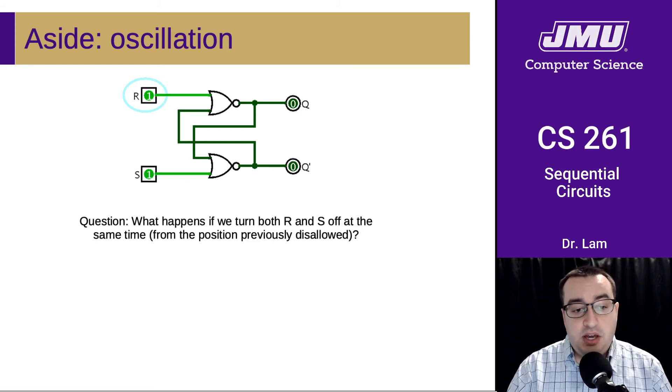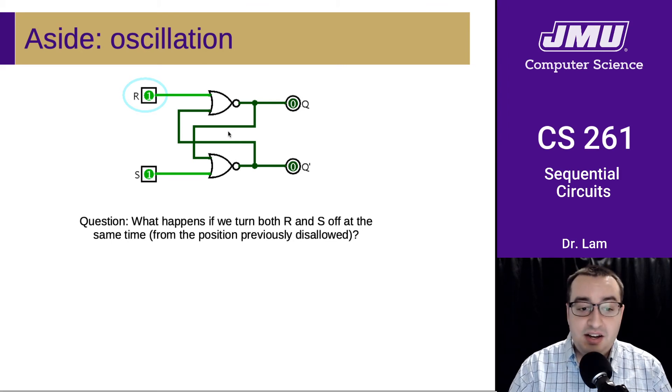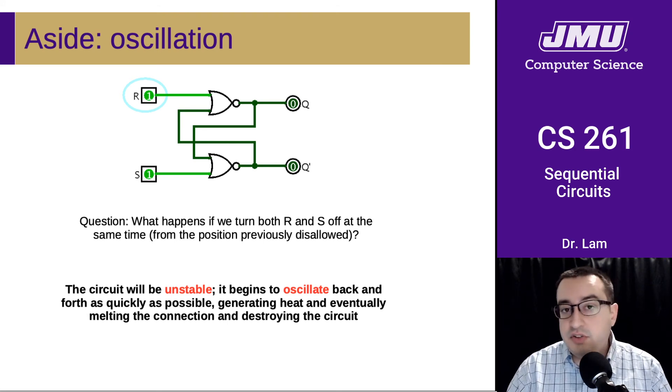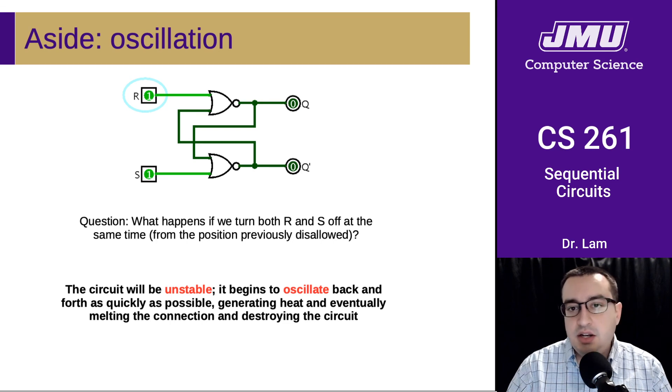If we turn both signals off at the same time, both outputs of the NOR will turn on simultaneously. Both will propagate into the other NOR gate, turning off the other NOR gate. The zeros coming out will propagate back around and turn it back on. We'll just get these values oscillating back and forth. The circuit becomes unstable and keeps going back and forth as quickly as possible. Every time the gate changes, it uses electricity and generates heat. It will eventually melt the connection, possibly cause a spark on the circuit board, and will certainly destroy the circuit.